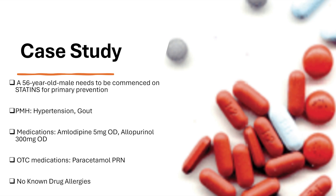There are a number of risks that need to be looked at before a patient can be started on primary prevention. If you want more understanding of who is eligible, guidance is available on NICE. This patient's past medical history includes hypertension and gout. Their medications are amlodipine and allopurinol. They do not take any over-the-counter medications, sometimes use paracetamol, and have no known drug allergies.